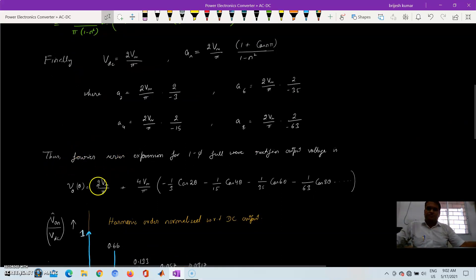Now the Fourier series expression that is written here. Please see the expression carefully. All those waveforms, cosine waveforms are even in number 2, 4, 6, 8 and all are negative.